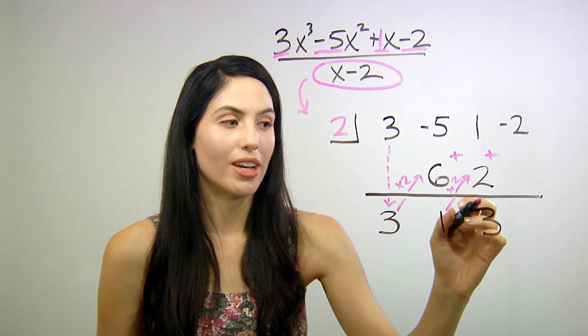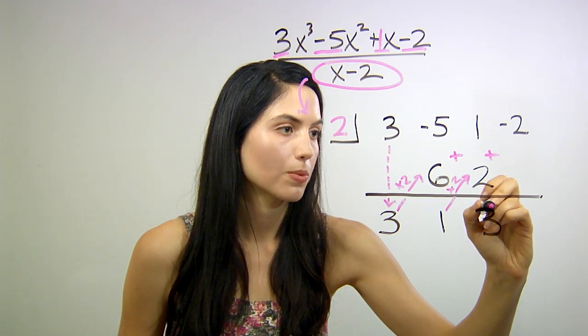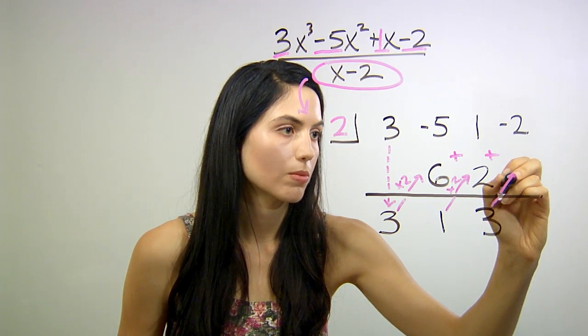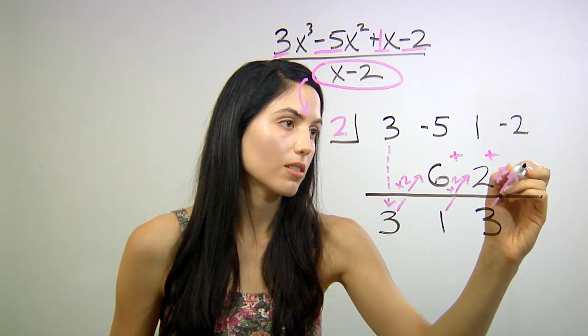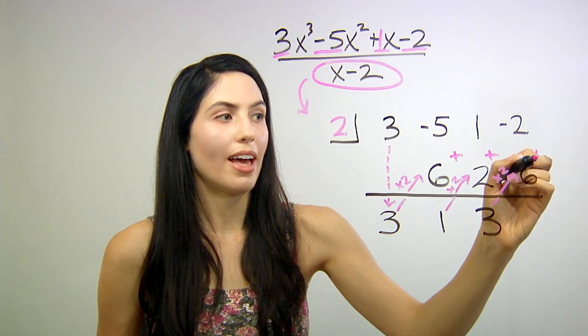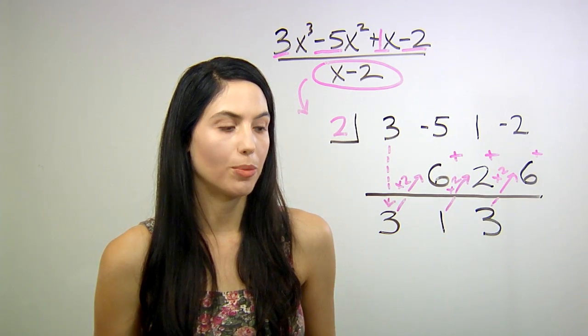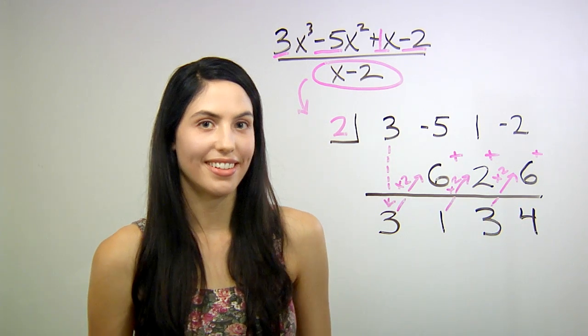Finally, one more time, multiply our 3 by the constant, 2. 2 times 3, we get 6. And one last time, add the numbers in the column. Negative 2 plus 6 gives us positive 4. And that's it.